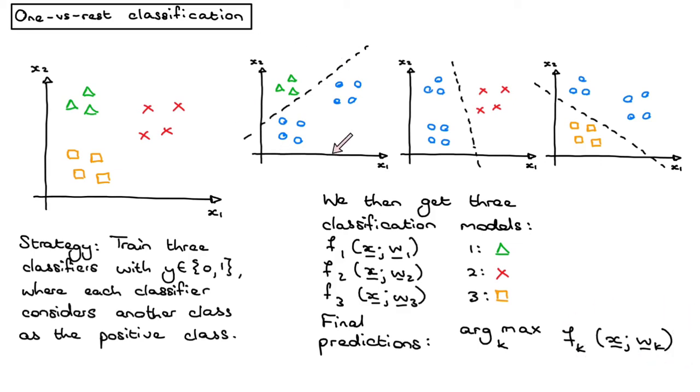If this is our first model f1, this is our second model f2, and this is our third model f3, then the final output of your model is simply going to be the model k that gave us the highest score for this input.